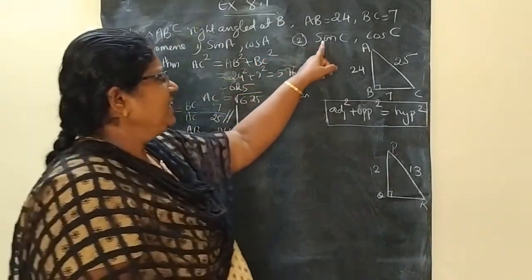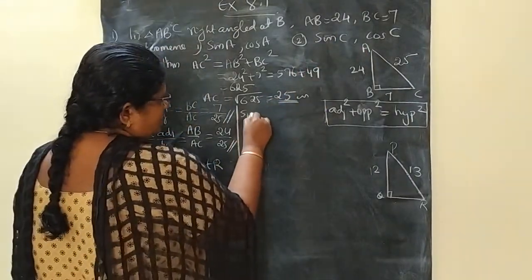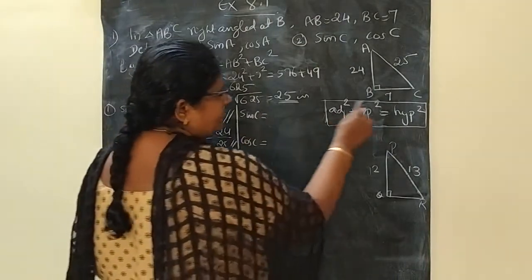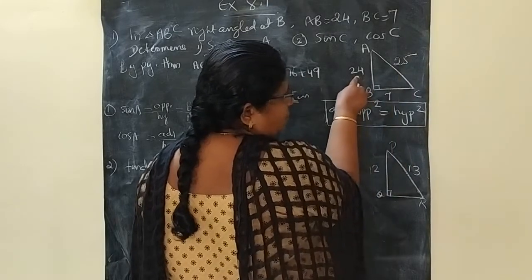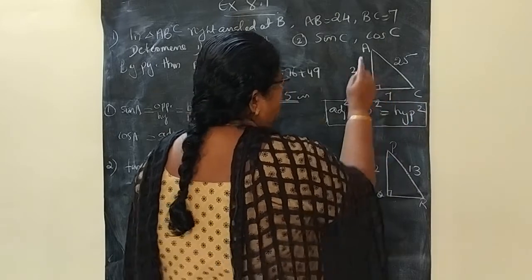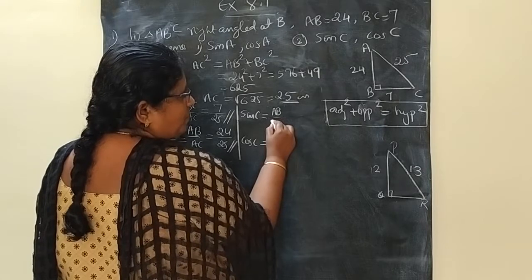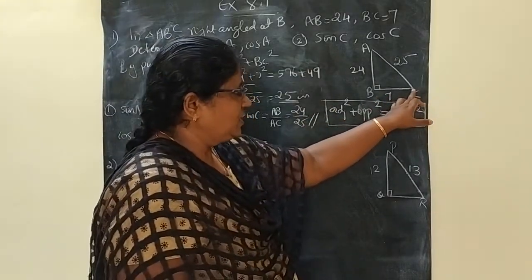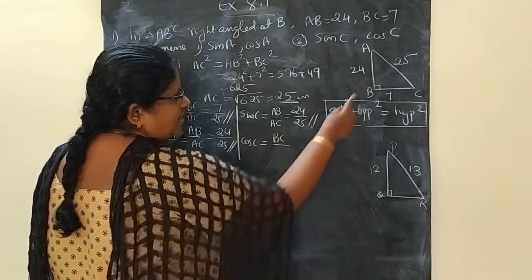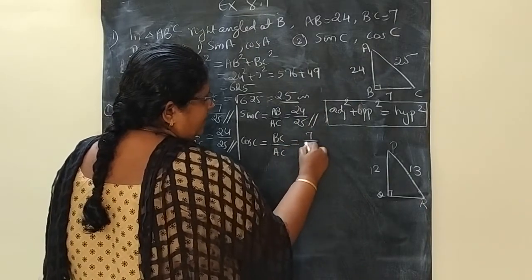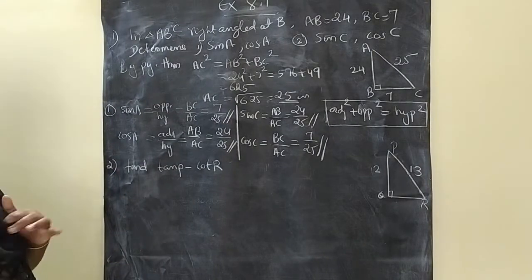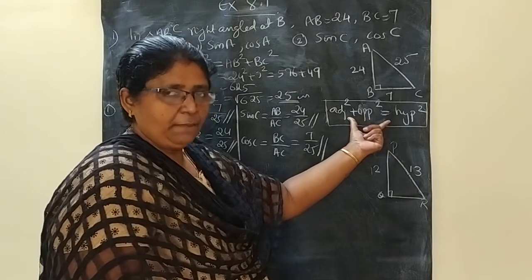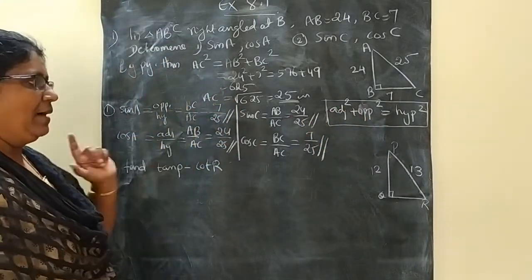Second question: find sine C and cos C. Sine definition is opposite by hypotenuse, but with respect to angle C. The opposite side to C is AB, and hypotenuse is always AC. So sine C equals AB divided by AC equals 24 by 25. Cos C: with respect to C, the adjacent side is BC and hypotenuse is AC, so cos C equals 7 divided by 25. Whenever you get a question like this, only two sides will be given. Find the third side using Pythagoras theorem and then apply the trigonometric ratio formula.